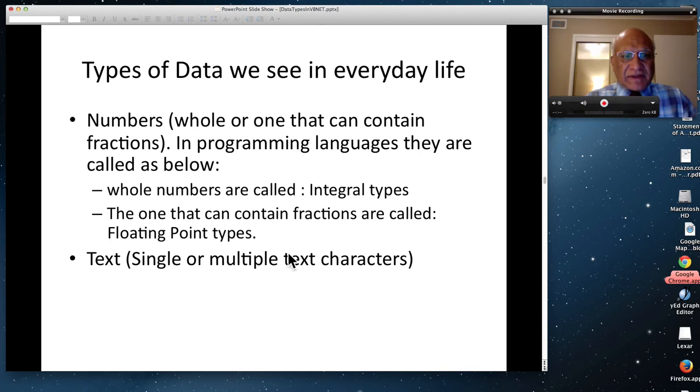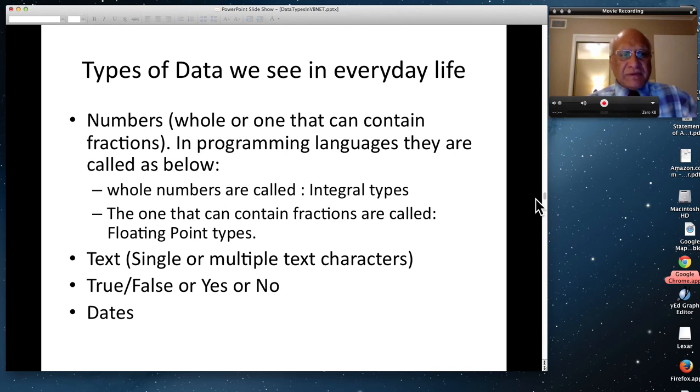But then, the other type is text, and text could be single character of a text, or multiple text characters, including zero. So text could be two types. And there are languages that don't treat text as two types. And then, true or false, or yes or no. And the dates. There could be more, but I think we are just going to kind of limit ourselves to these.